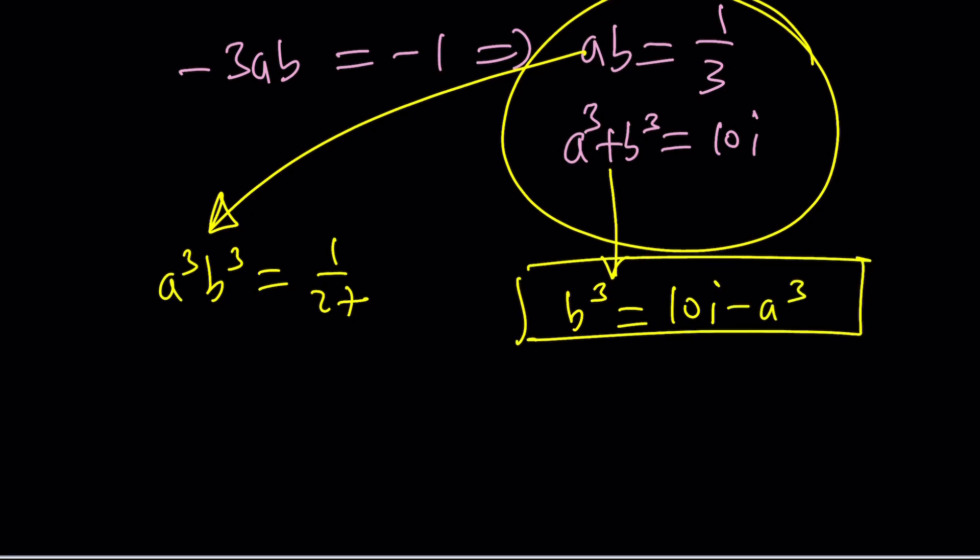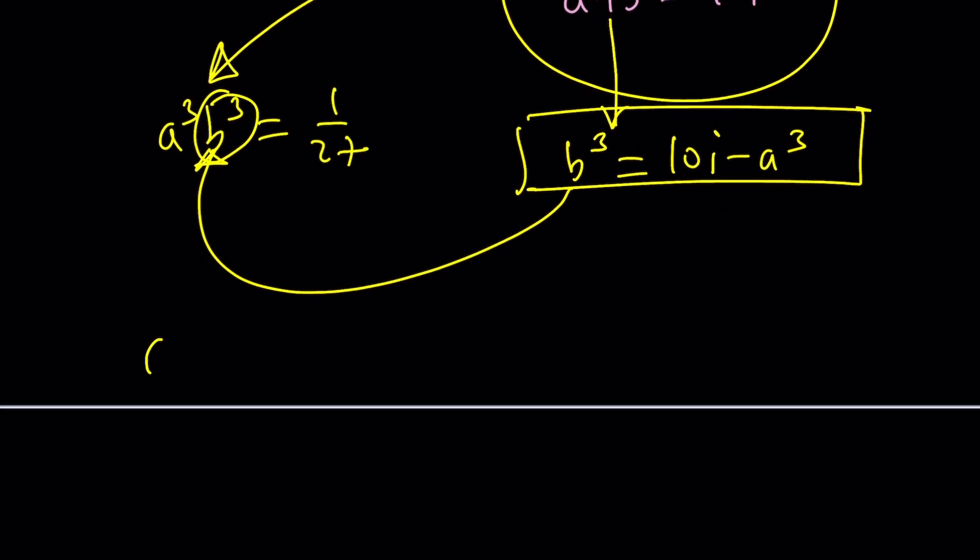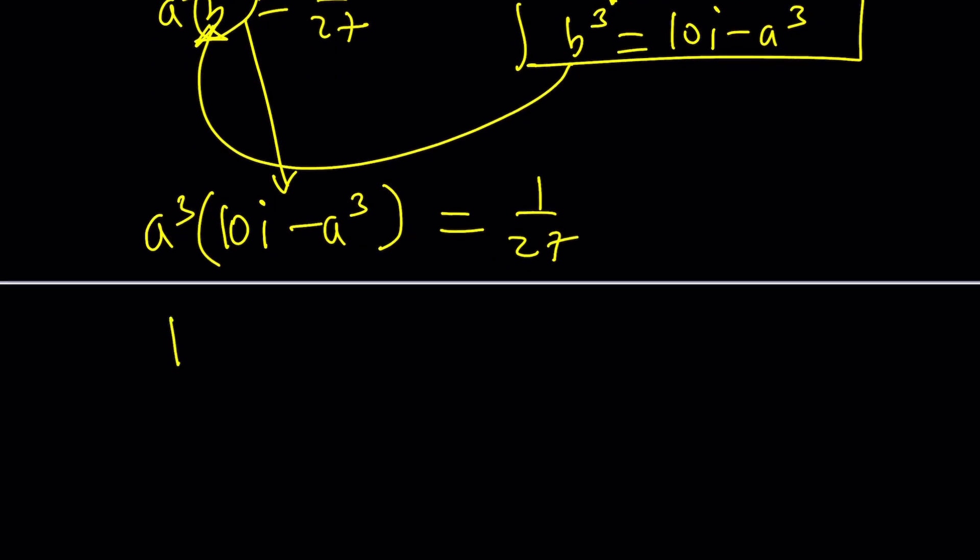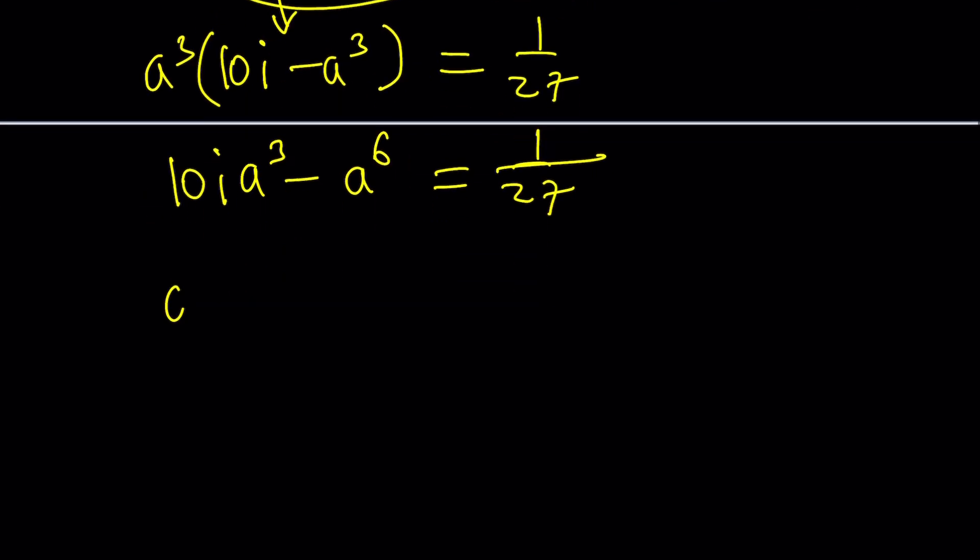And now you can take that and substitute here. This is the power of algebra and substitution. You can get a hexic, bi-hexic equation, or maybe bi-quadratic, or is it tricubic? Anyway, something like that. I don't know. You'll decide. So I'm going to make the replacement and then solve this. But when you distribute, you get 10ia³ - a⁶ equals 1/27.